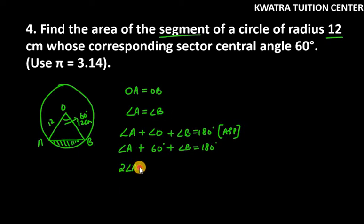So I will write it as twice of angle A is equal to 180 minus 60. Now 180 minus 60 is 120. So angle A is equal to 120 over 2, so 120 over 2 is 60 degrees.